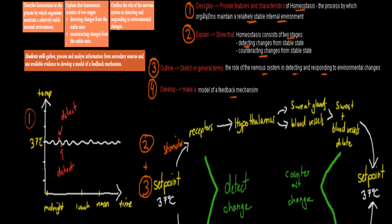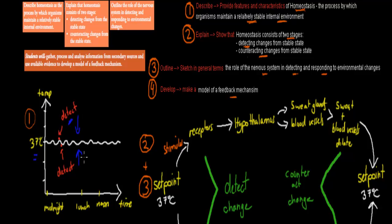This is about homeostasis. The first dot point says to describe homeostasis, which means provide features and characteristics of the process by which organisms maintain a relatively stable internal environment. We want to keep our internal environment relatively stable — for example, keeping our temperature at 37 degrees Celsius to make sure enzymes work. We need mechanisms that can detect change if it goes too high or too low, and bring it back to that set point.